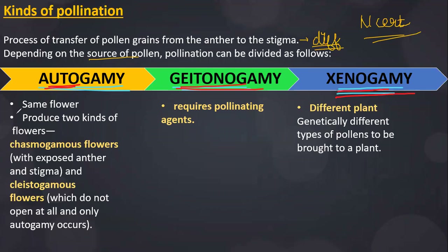Autogamy means the pollen grains are deposited from the same flower — that is, transfer of pollen grain from the anther of a flower to the stigma of the same flower. Autogamous flowers produce two kinds of flowers: chasmogamous flowers and cleistogamous flowers. In chasmogamous flowers, the anther and stigma are exposed, so they can undergo both self-pollination and cross-pollination.